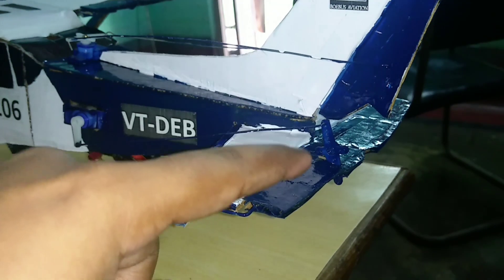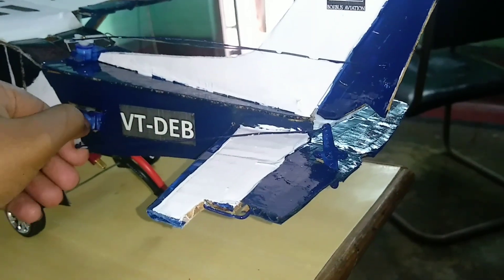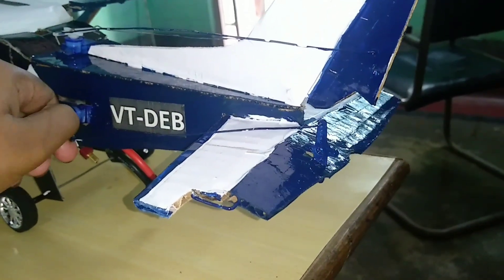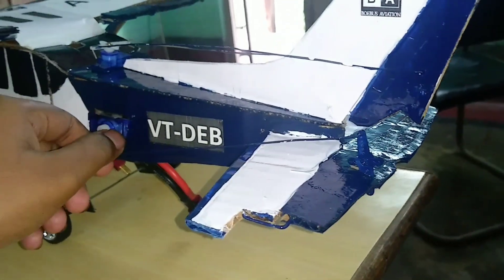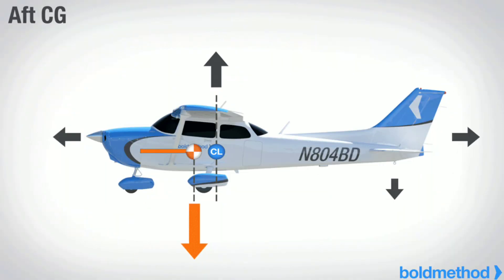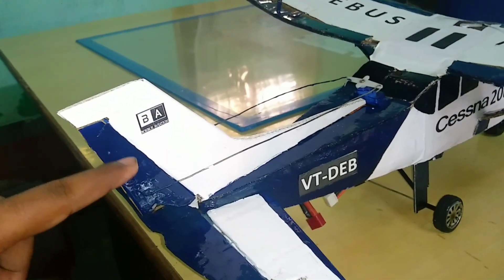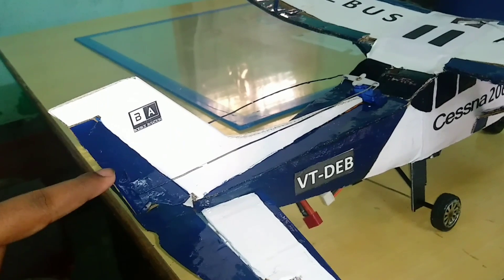These are the elevators attached to the trailing edge of the horizontal stabilizer. Every time the aircraft changes its height or altitude, it is because of these surfaces. If the elevator goes up, it will push down the aircraft tail, which will automatically raise the aircraft nose. The third control surface is called the rudder, which is hinged at the trailing edge of the vertical stabilizer. The main purpose of the rudder is to change the heading, or in simpler terms, to change the direction of the aircraft.